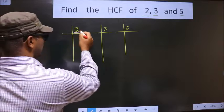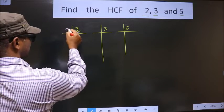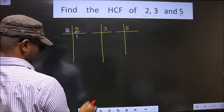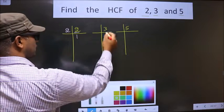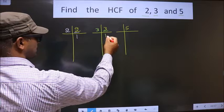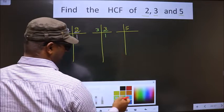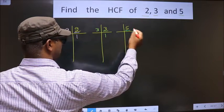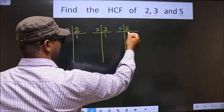Here we have 2. 2 is a prime number, so we take 2 once. Now, here we have 3. 3 is a prime number, so we take 3 once. Here we have 5. 5 is a prime number, so we take 5 once.